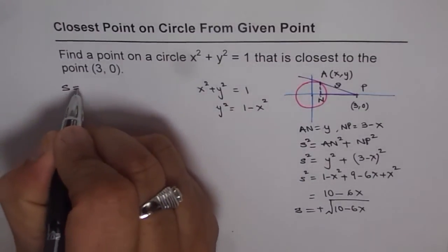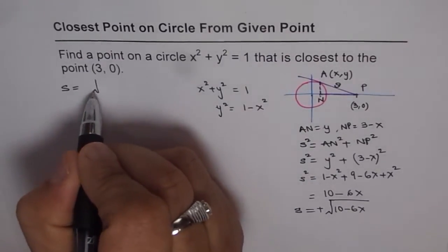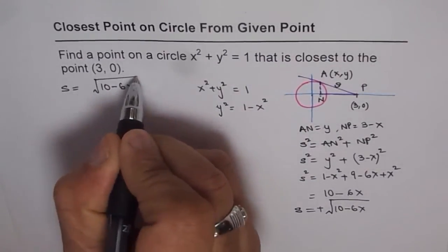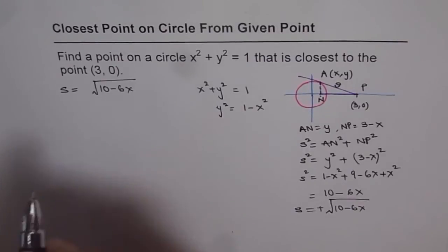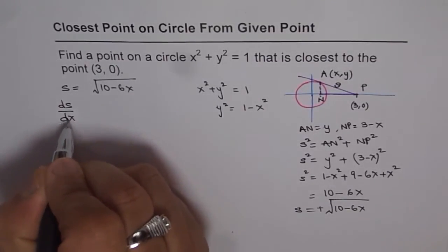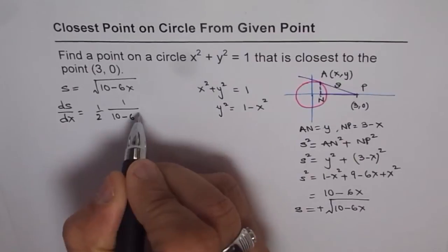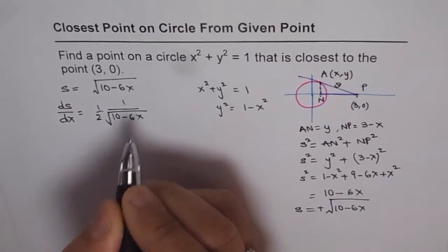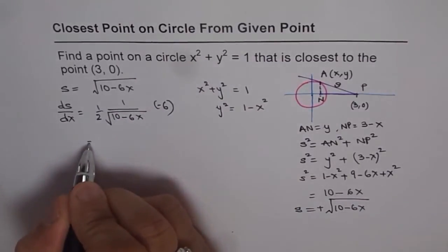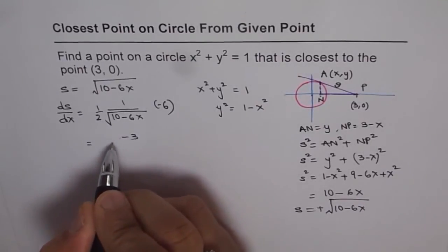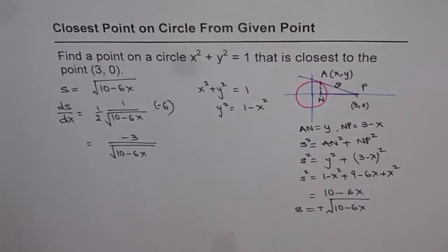So what we have here is S, the distance which we want to minimize. Closest distance means minimize, equals square root of 10 minus 6x. Now to minimize this distance we need to find derivative with respect to the variable x. So ds over dx, this is square root, so it will be half of 1 over 10 to the power of minus half, times derivative of inside function which is minus 6. Basically I get a derivative which can be simplified and written as minus 3 over square root of 10 minus 6x.